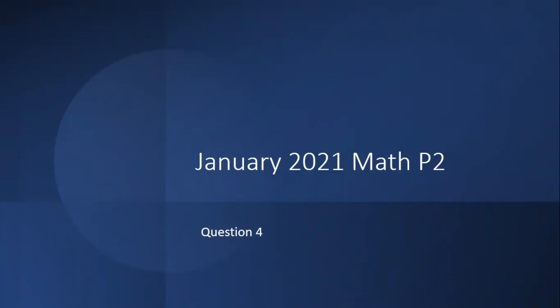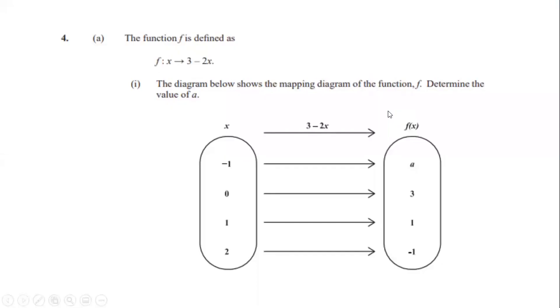Hello guys and welcome back to another video. Today we'll be working on the January 2021 Math Paper 2, Question 4. So part 4a says the function is defined as f(x) = 3 minus 2x, and the diagram shows the mapping of the function f. We need to determine the value of a. We're going to use the equation 3 minus 2x.